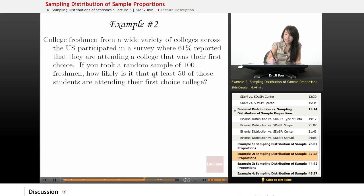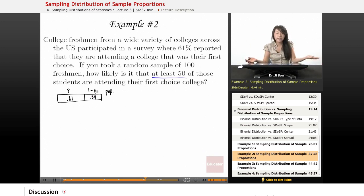So it's saying at least 50, so that's a good thing to keep in mind for later. But let's draw this population. So here's my population of college freshmen, and 61%, so not quite half, but a little more than half. So 61%, that's our P, and 1 minus P is not quite 40%, but it's 39. So the other 39, they're not attending their first choice college.